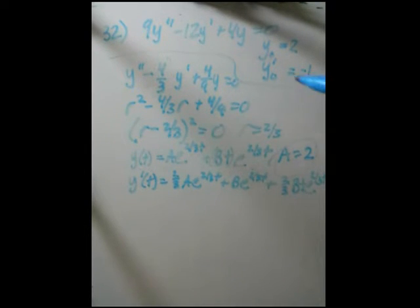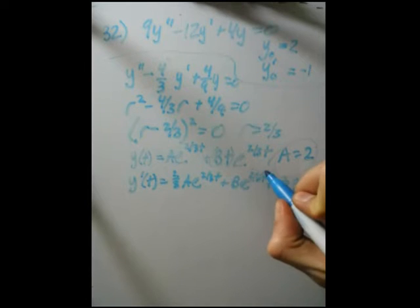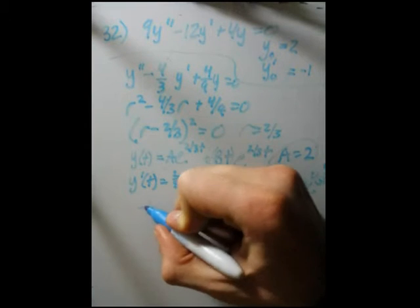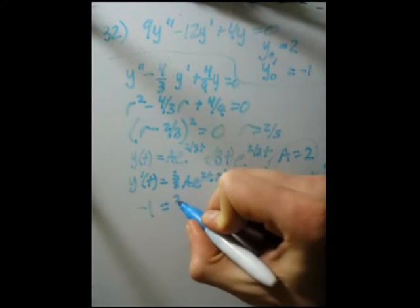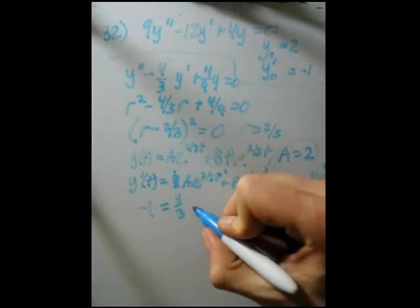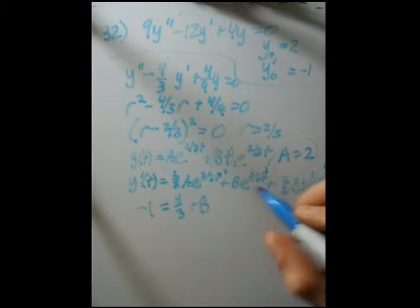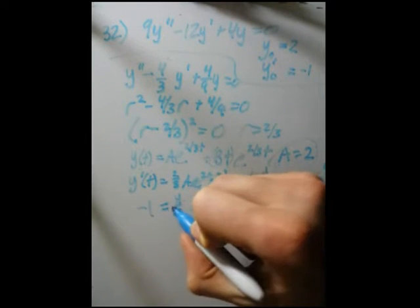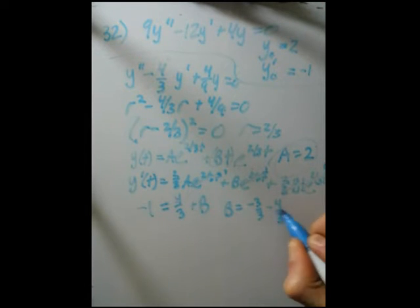Now, if we plug in t equals 0 here, this whole term vanishes like before because of this t here, and these exponentials become 1. Now, y prime at 0 is equal to negative 1, and that equals 2 thirds times a, which we already know to be 2. So we'll just plug that in right away. Save the time. Plus b. So b is equal to minus 3 thirds, which is this, minus 4 thirds. That is minus 7 thirds.